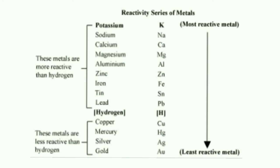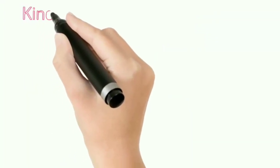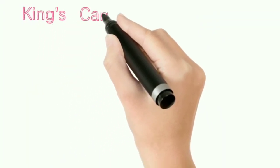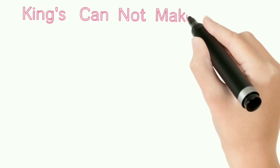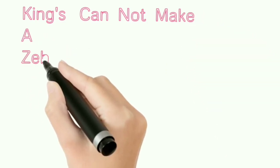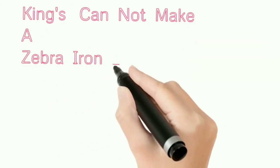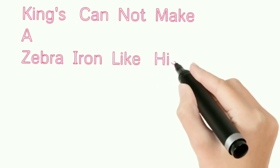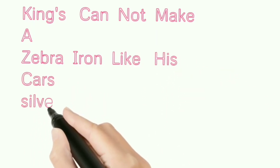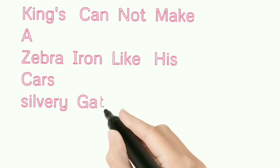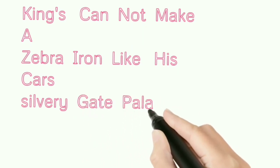Here is a mnemonic to remember the reactivity series of metals: 'Kings Cannot Make A Zebra Iron Like His Cause Silvery Gate Palace' — standing for Potassium, Calcium, Sodium, Magnesium, Aluminium, Zinc, Iron, Lead, Hydrogen, Copper, Silver, Gold, Platinum.